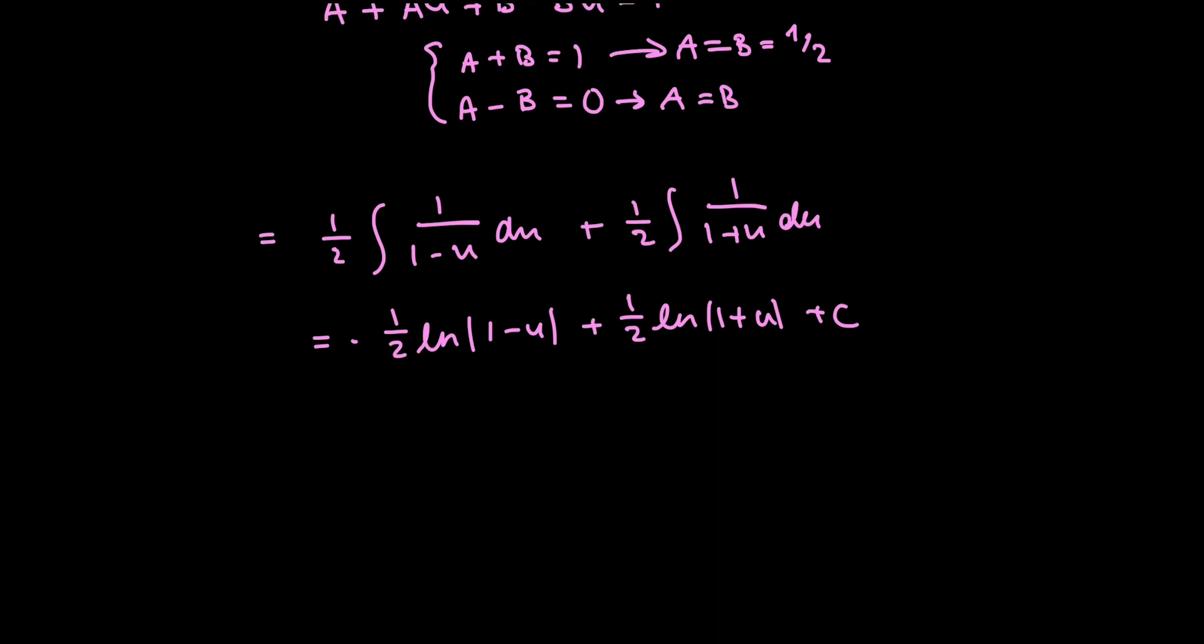At this point, we are done with the integration. Of course, we do have to replace what we substituted u with, but we're done with the integration. So this becomes, I can condense this into one log using my properties of logs. So I have 1 half log of 1 plus u over 1 minus u, plus c.